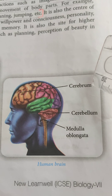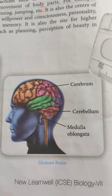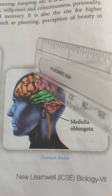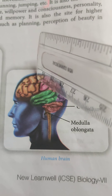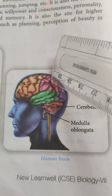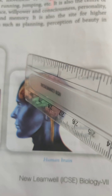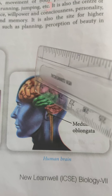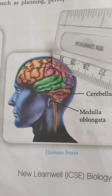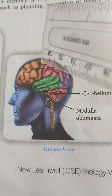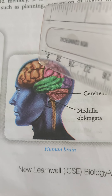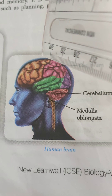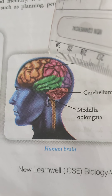Cerebrum is the uppermost, largest, and most complex part of the brain. Its surface shows ridges and grooves which increase its surface area to accommodate more and more nerve cells. The cerebrum controls voluntary actions such as imagination, thoughts, decision, and movement of body parts — for example, running, walking, jumping, etc.